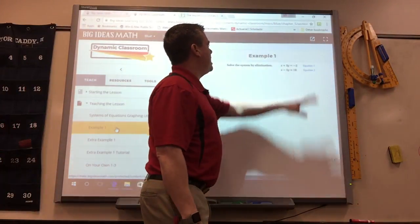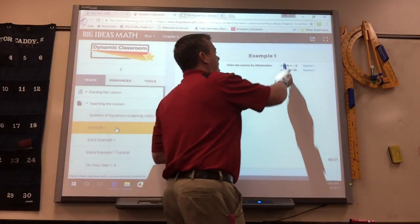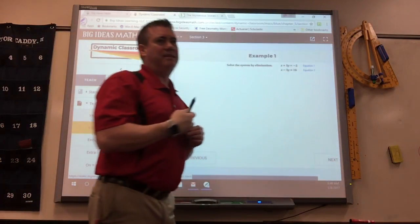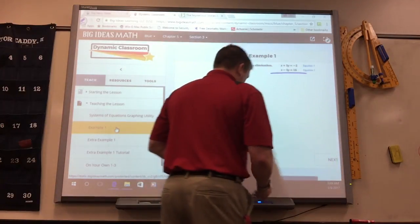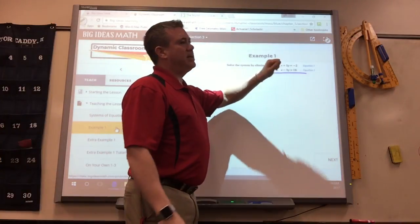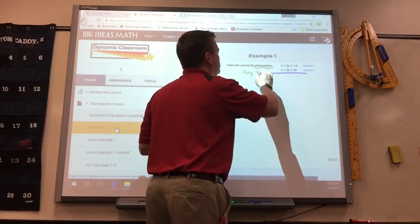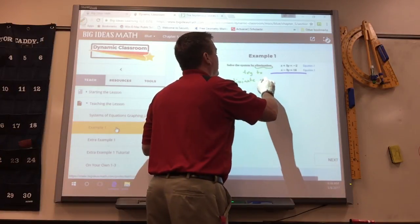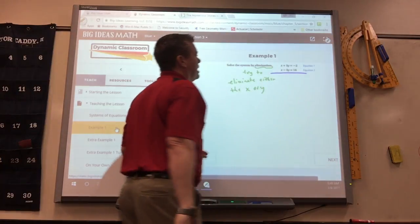So here we've got a system of equations. And again, this is the key. You got to have the x's lined up, the y's, and the numbers, and the equal signs. If they aren't, you got to move stuff around. So what we're going to do now is the reason why they call it elimination is you try to eliminate either the x or y. That's the whole idea.